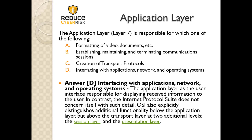This comes down to the test — you've got to pick out which ones don't fit. One of these things is not like the other. A, formatting video documents, we just talked about — we can probably get rid of that one. So the application layer, layer 7, is responsible for which of the following? The answer is D — interfacing with applications, network, and operating systems.